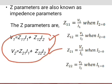This is equation 1 and equation 2, where Z11, Z12, Z21, and Z22 are the constants called impedance parameters that are measured in ohms.